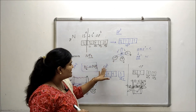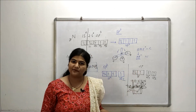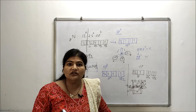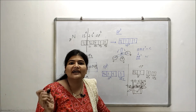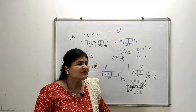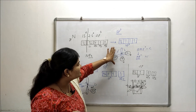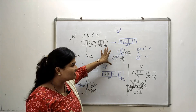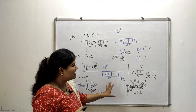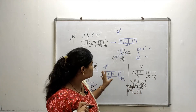So this is how sp3, sp2 and sp hybridization of nitrogen works. Depending on the molecule you are studying — or the atoms with which nitrogen is bonding — it decides whether it will be in sp3 (tetrahedral), sp2 (trigonal planar), or sp (linear).